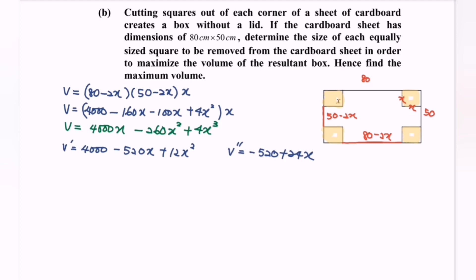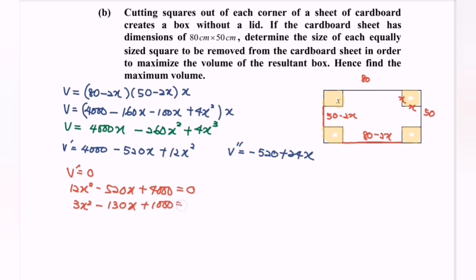Step 3 is to find the critical values. Set V prime equal to 0, so 12x squared minus 520x plus 4000 equals 0. Simplify: 3x squared minus 130x plus 1000 equals 0. Factorize: (3x − 100)(x − 10) equals 0. So the critical values are x equals 100/3 or x equals 10.